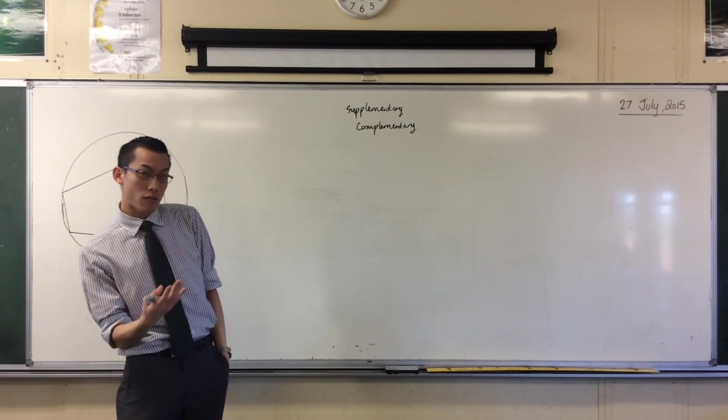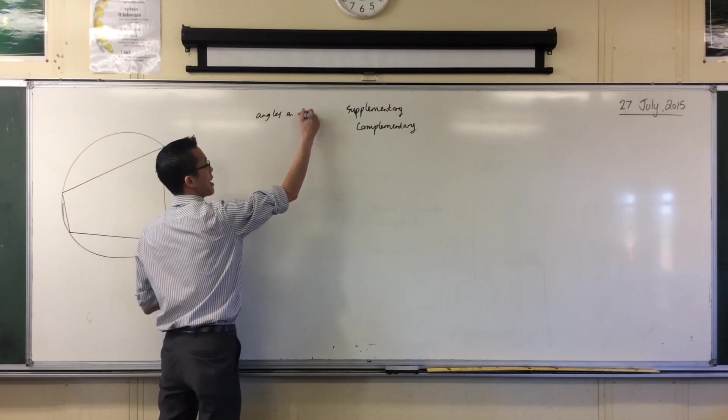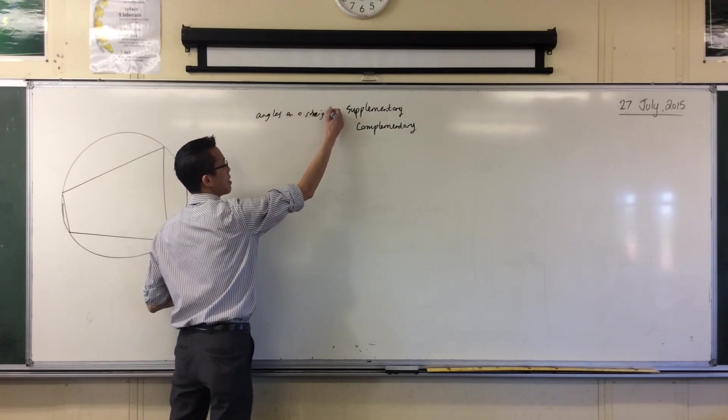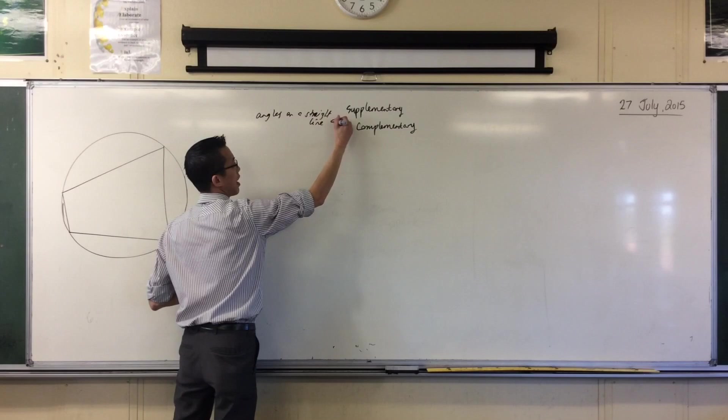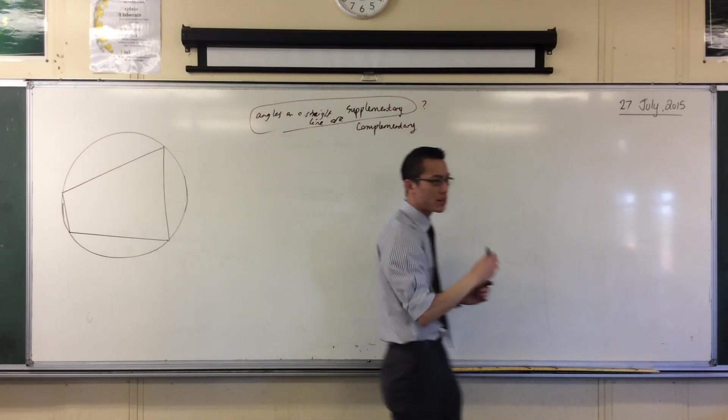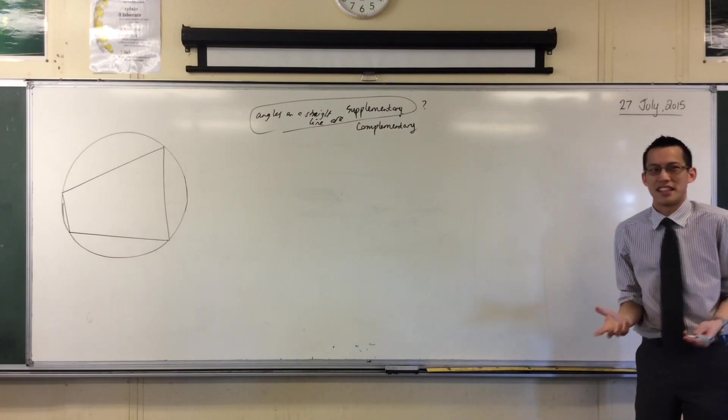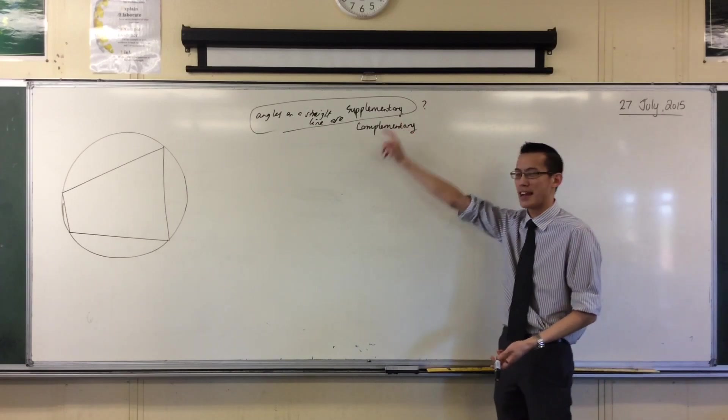So it isn't really right to say, for instance, angles on a straight line are supplementary, because you might have lots and lots of angles on there. That's really not that big a deal. We know what you mean, that it adds up to 180.